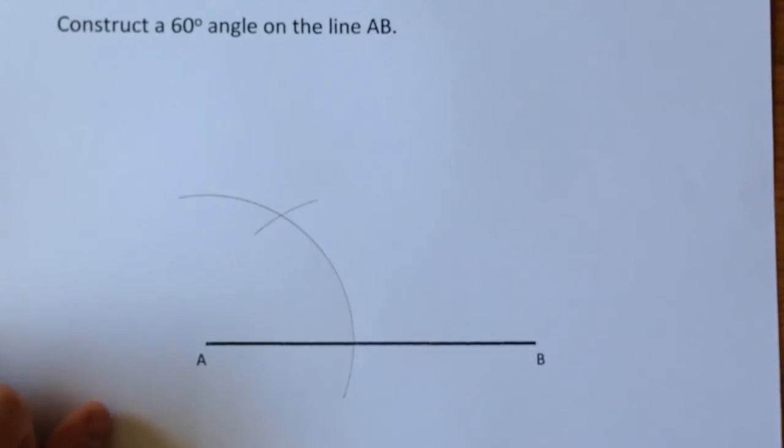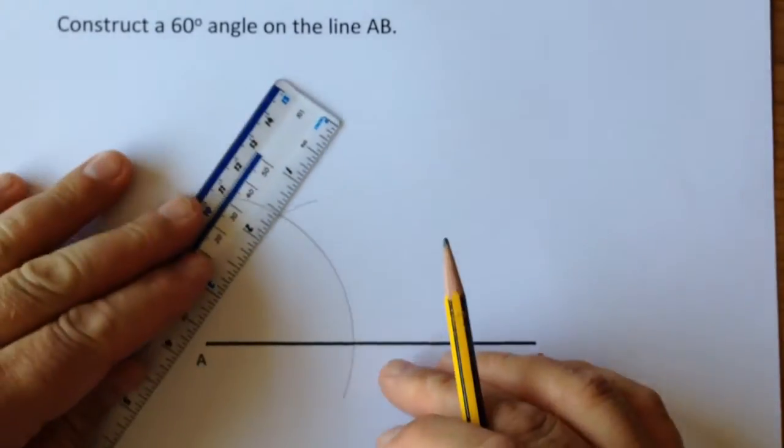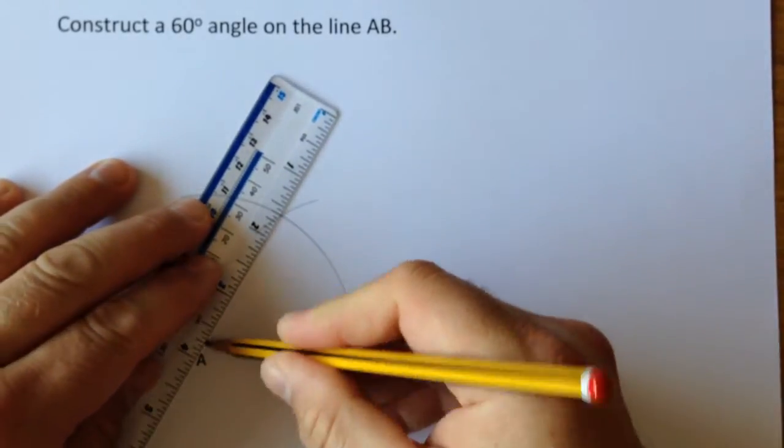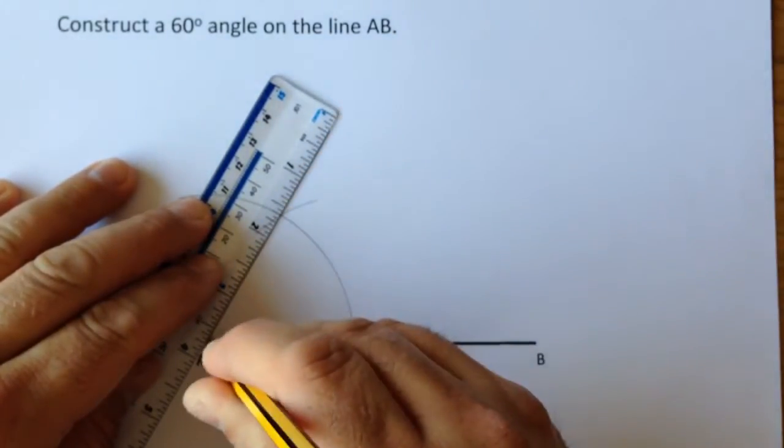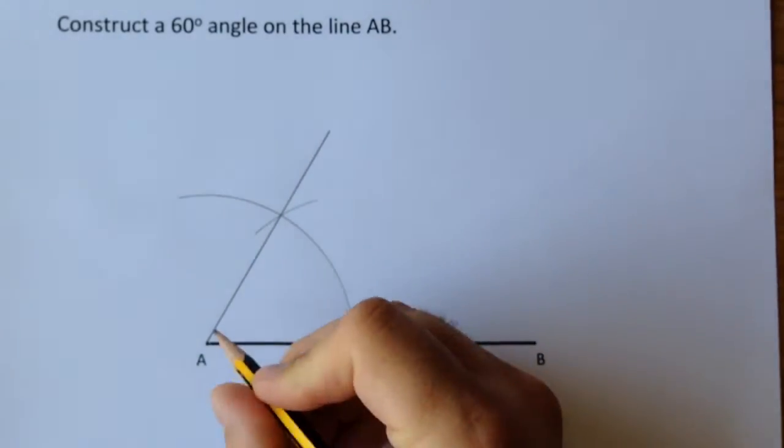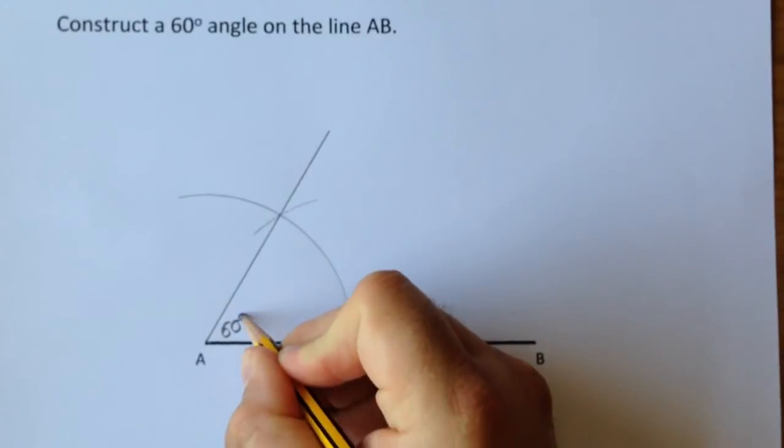Put your compass down, get your ruler, get a pencil, and from A, the end of the line, draw a line straight through where the two arcs meet. You've now constructed a 60-degree angle.